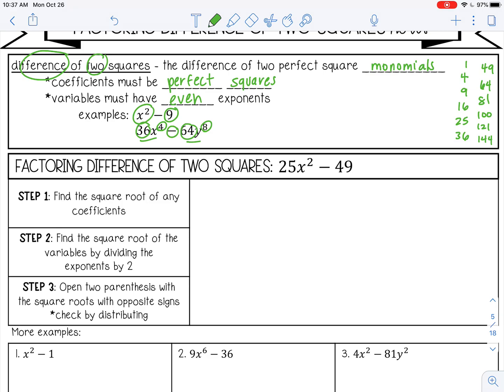So you want to find the square root of any coefficients first. So the square root of 25 is 5, and the square root of 49 is 7. Don't worry about that negative in the middle. Number two, find the square root of the variables by dividing the exponents by 2. So the square root of x squared, 2 divided by 2, that's x to the first power, or just x.